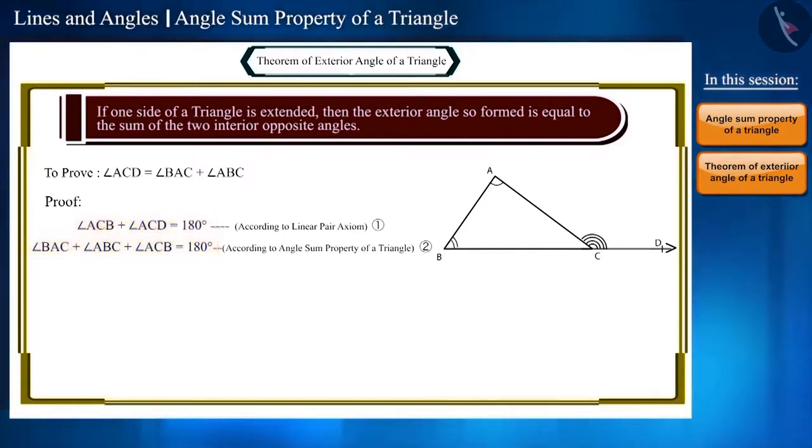Now, if we look at equations 1 and 2, the RHS of both the equations are equal. Therefore, the LHS of both the equations will also be equal. We can also write it like this: angle ACB plus angle ACD equals angle BAC plus angle ABC plus angle ACB. Let us call this equation 3.